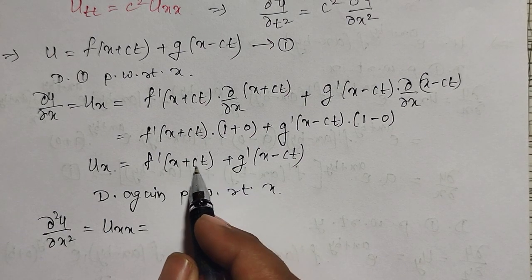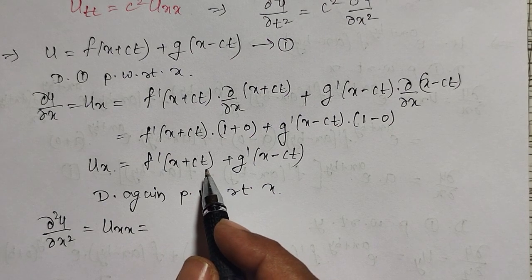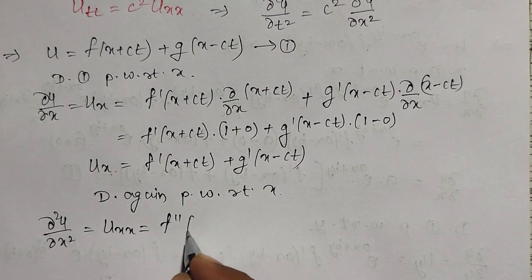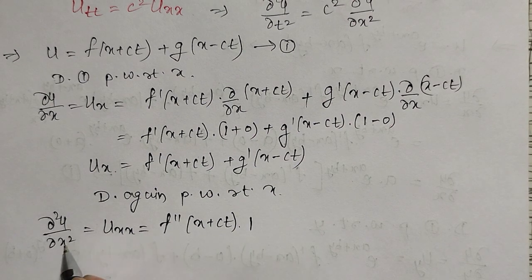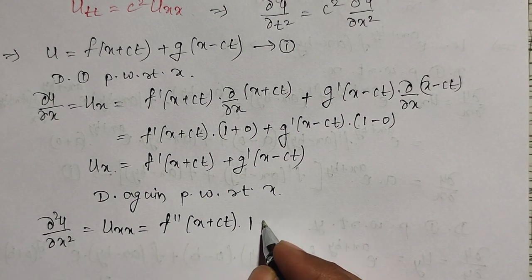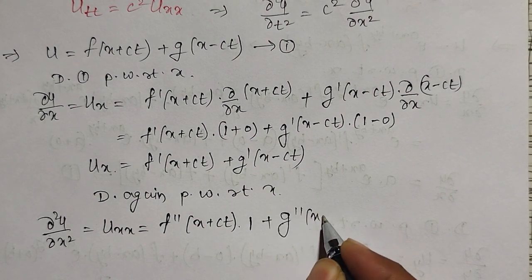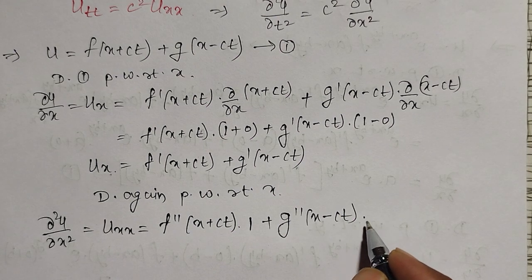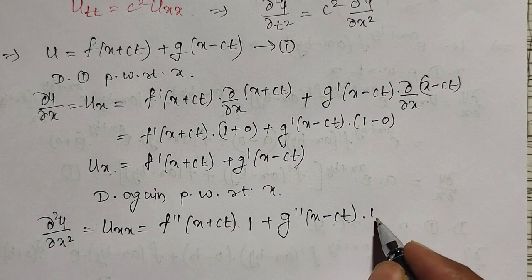To find u_xx, we differentiate u_x again with respect to x. No product rule is needed, only the chain rule. So f′ becomes f″(x + ct) times the partial derivative of (x + ct) with respect to x, which is 1. Plus g″(x - ct) times the partial derivative of (x - ct) with respect to x, which is again 1. So u_xx = f″(x + ct) + g″(x - ct).